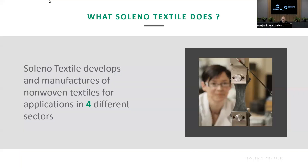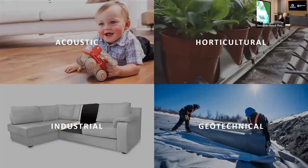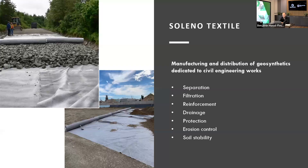This slide shows what our New Textile division does. We develop and manufacture non-woven textiles for various applications. There are four major sectors where we push our products: acoustics, agricultural, industrial, and geotechnical. Today we're going to focus on the geotechnical sector.